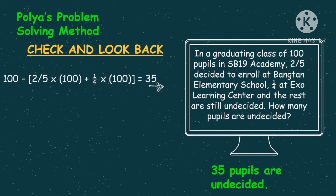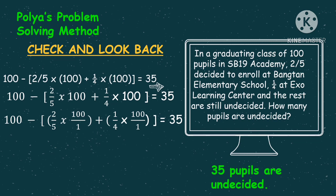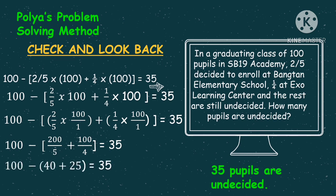To check and look back for our final answer, isasubstitute lang natin ang ating nakuhang value of N doon sa ating number sentence. So 100 minus 2 over 5 times 100 over 1, plus 1 fourth times 100 over 1, is equal to 35. 100 minus: 2 times 100 is 200, 5 times 1 is 5. Plus 100 times 1 is 100, 4 times 1 is 4. 200 divided by 5 is 40, and 100 divided by 4 is 25. 40 plus 25 is 65. Subtract 65 from 100 is 35. So 35 is equal to 35 — check. Therefore, the pupils that are still undecided to enroll are 35.